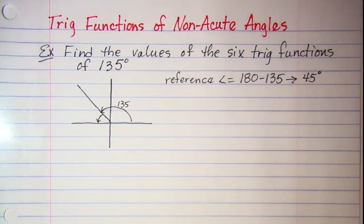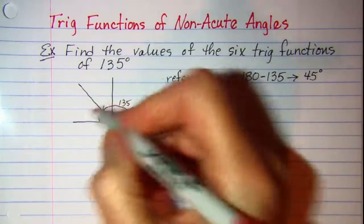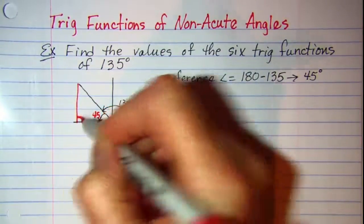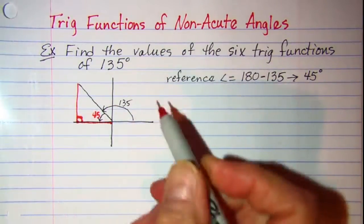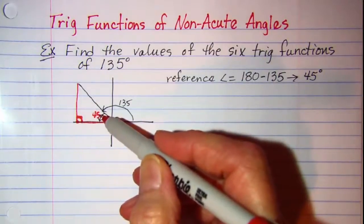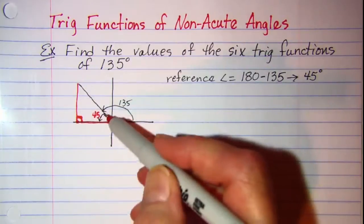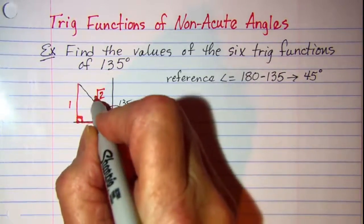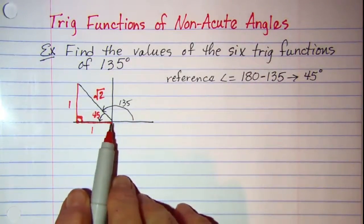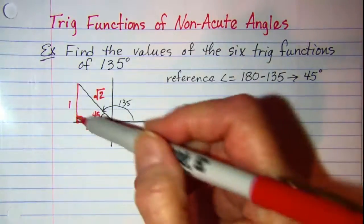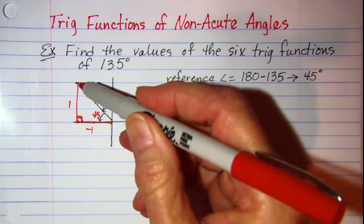We'll use that reference angle to find the sides of our reference triangle. Enter a 45 degree reference angle and draw the reference triangle — always draw your triangle so that one side is on the x-axis and the other side is parallel to the y-axis. We know from our special triangles that this is an isosceles right triangle, or 45-45-90, so we put in 1, 1, and root 2 as the side measures. Because this is left of the y-axis, the x coordinate is negative, and because it's above the x-axis, the y coordinate is positive.